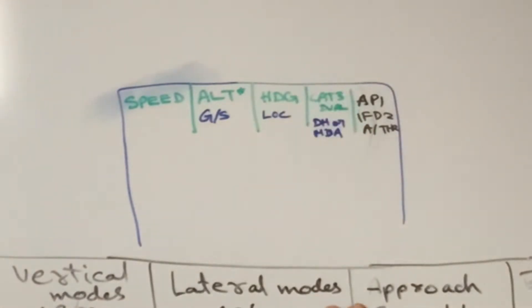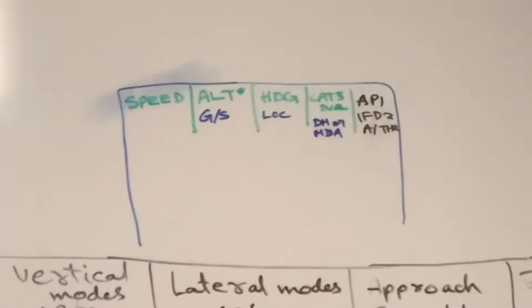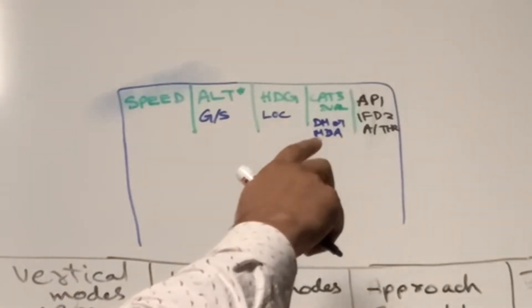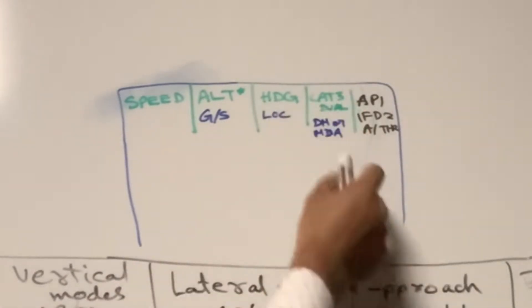The fourth column shows approach capabilities and will be written in white — like CAT 3 Dual or CAT 3 Single. If both autopilots are available it will be CAT 3 Dual; if one autopilot is available during approach it will be CAT 3 Single. Next is DH — the minimums DH or MDA — whatever was entered in the MCDU performance approach page. Whatever figure is entered, that same one will appear here during the approach phase.